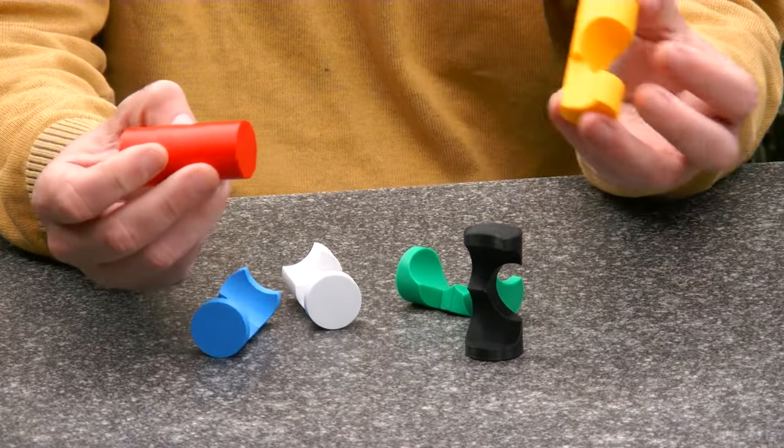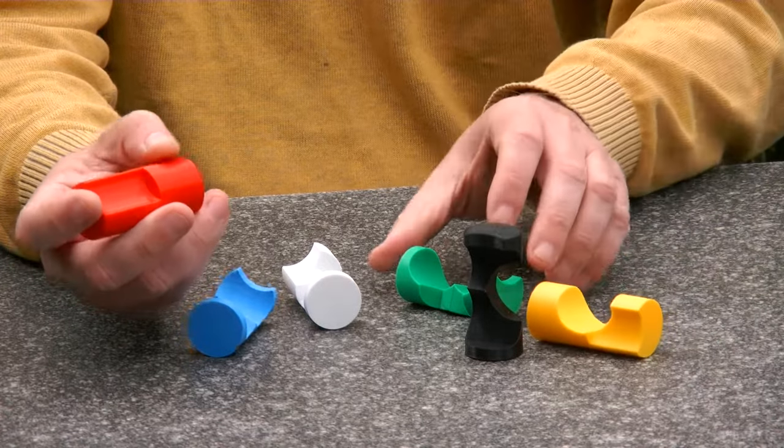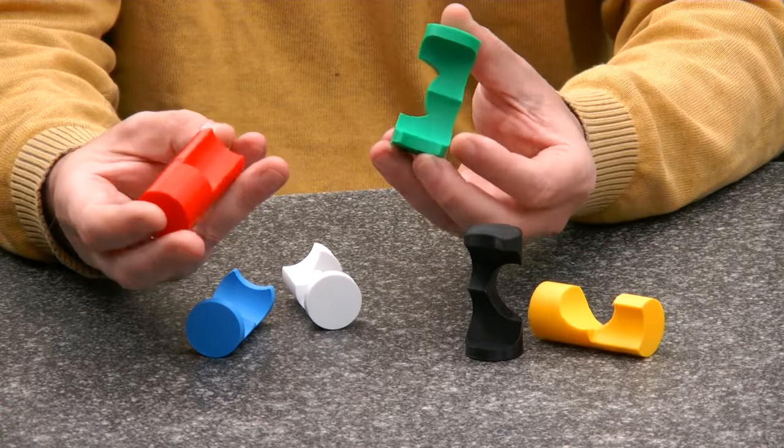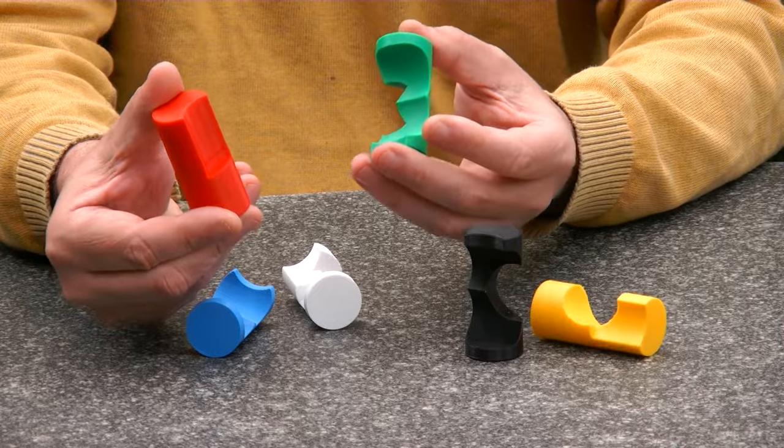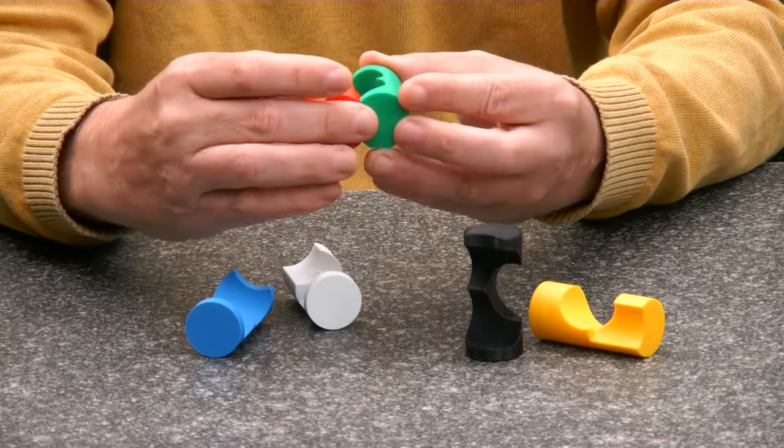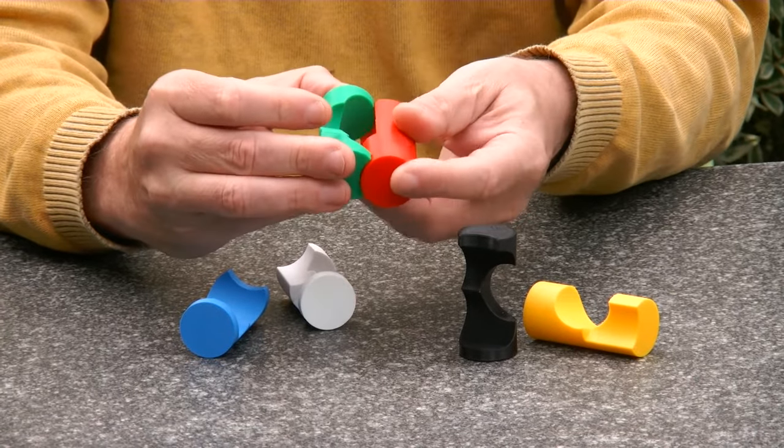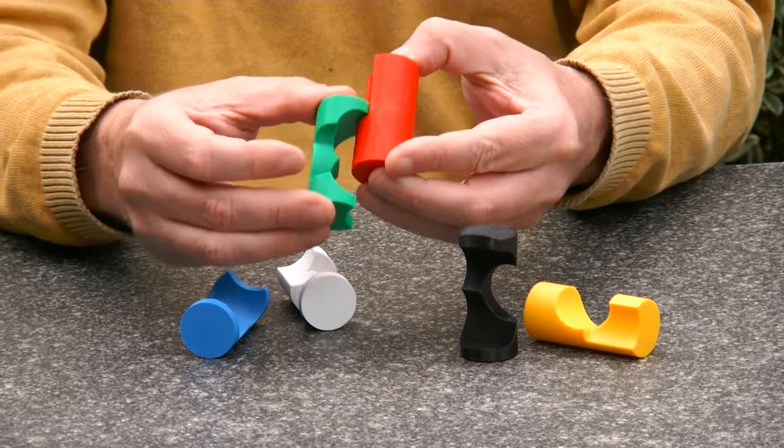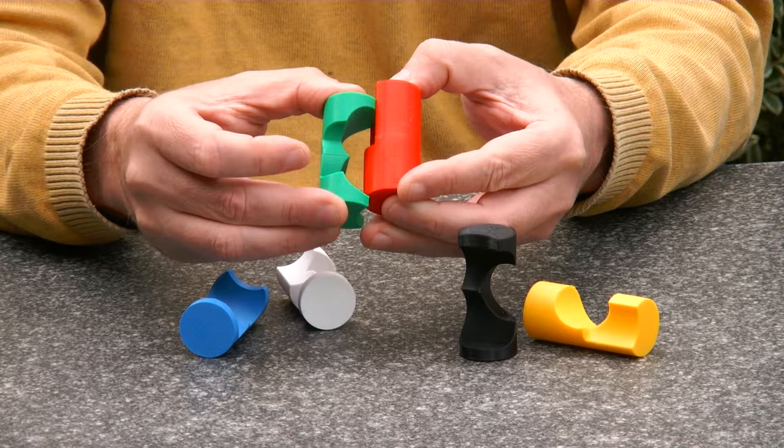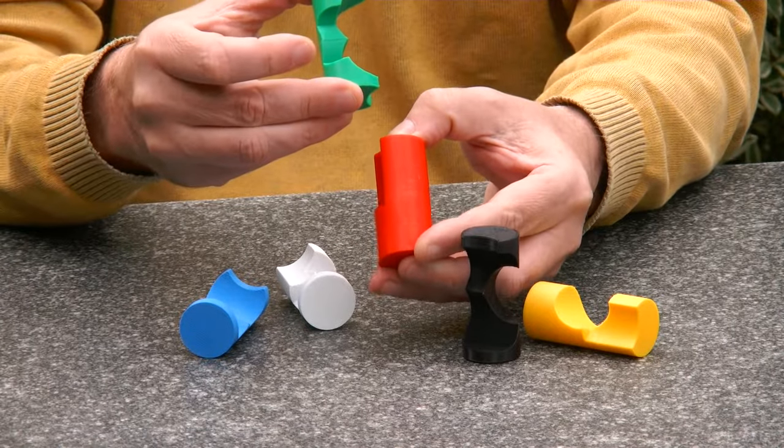And as mentioned, one of the interesting aspects of this puzzle is the longitudinal overlap. So the green and the red pieces, they overlap with each other. And if you move them in this direction, they even block. So you can slide them out only in that direction.